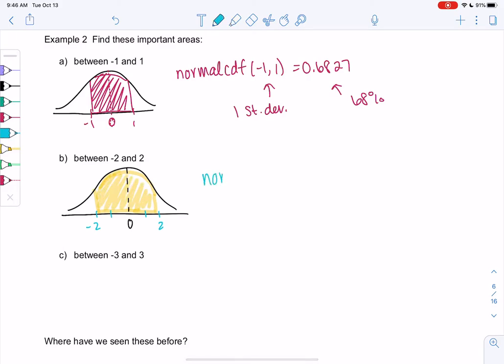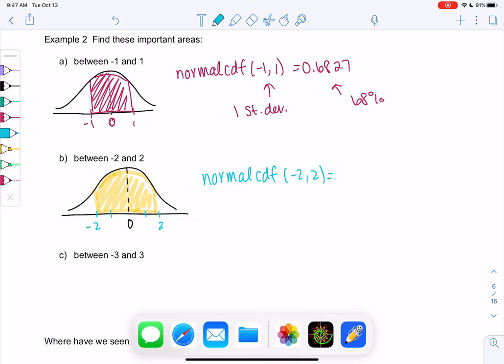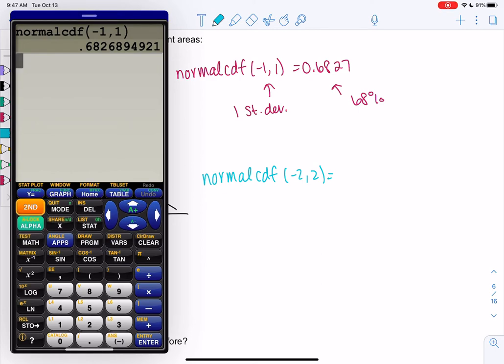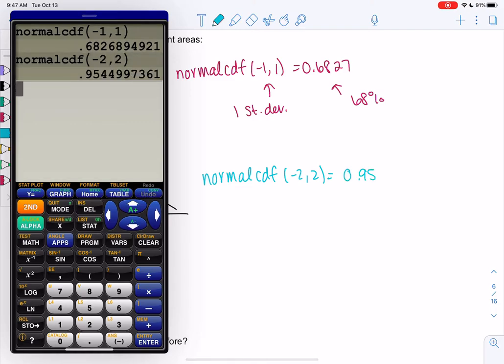So we'll do normal CDF. Negative 2 to 2. I remember the empirical rule telling me around 95% for two standard deviations. Yep, 95.45.